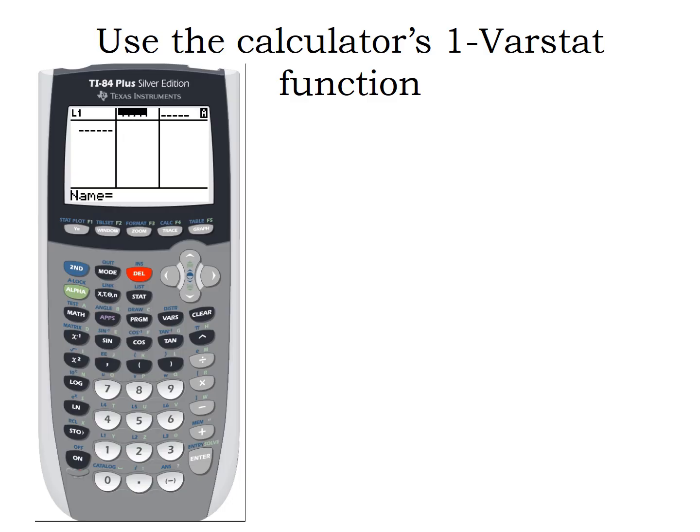Now next to list one, I want this to be list two. So I'm going to go to second function and then the number two. If you look at the numbers one through six, right above them you'll see L one, two, three, four, five, six. So I'm telling the calculator I want this list to be list two. And notice it brought back the numbers.